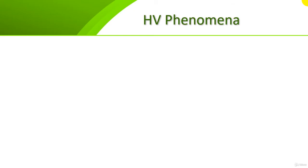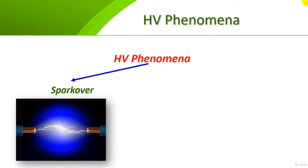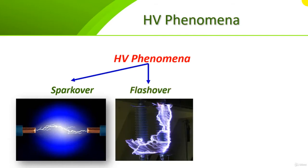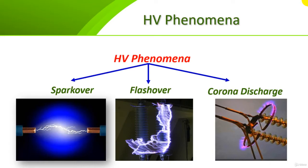This tutorial covers high voltage phenomena that may occur in electric power systems due to very high voltages. There are three such phenomena: spark over, flash over, and corona discharge. All of these phenomena depend on the concept of electric breakdown caused by very high voltage.